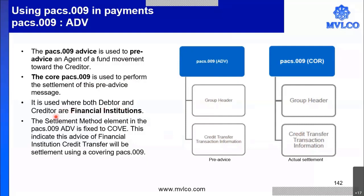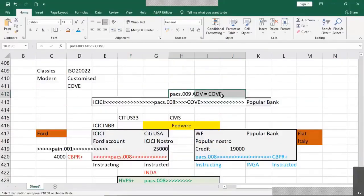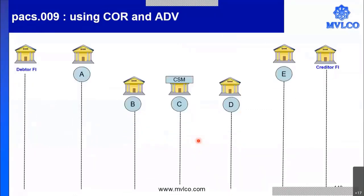This is to be used when both the debtor and the creditor are financial institutions. The settlement method here is fixed to COVE or cover. That is why PAX009 advice can carry cover as the settlement mechanism. Before we go to the questions, let me first show the process, which will be identical to what we did in our cover method of payment for customer transactions. It is called the pre-advice method.